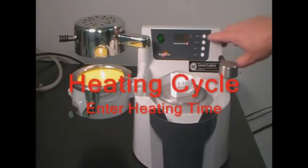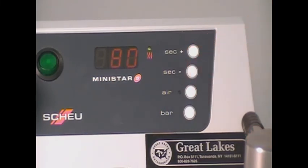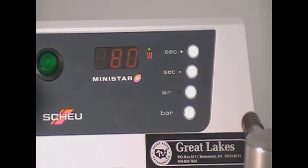Material heating times are entered by pressing the seconds plus or seconds minus button. Seconds will increase or decrease in five-second intervals. Press and hold the button to rapidly move time to the desired value.